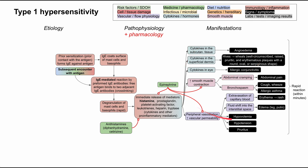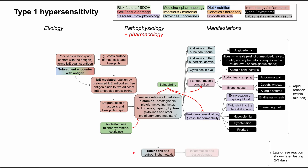Everything described so far is a rapid reaction, happening within minutes of antigen exposure. In addition, the body might mount a late-phase reaction, typically starting hours later and sometimes lasting 48 to 72 hours. In addition to the immediate release of mediators, you'll also trigger eosinophil and neutrophil chemotaxis. This later phase is largely eosinophilic, whereas the rapid phase is largely IgE- and histamine-mediated. These cells spread throughout the body, causing inflammation and tissue damage with downstream inflammatory effects.